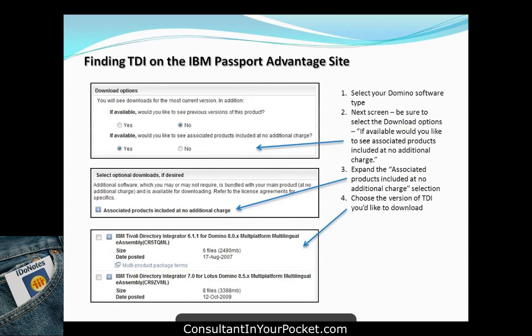When you go to the Passport site and browse Domino software selections, you'll see an option to view associated products available at no charge — including Tivoli, DB2, and WebSphere. That's where you find the Tivoli downloads. The version we're going to show today is version 7, though both 6.1.1 and 7 are still being supported.